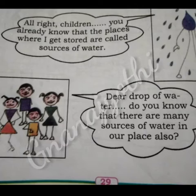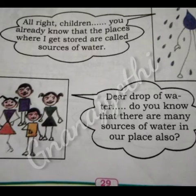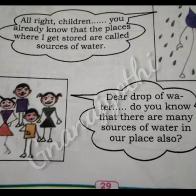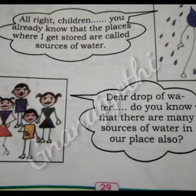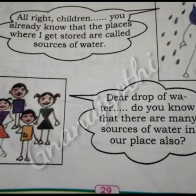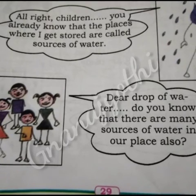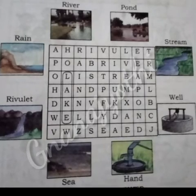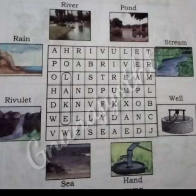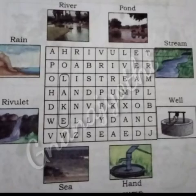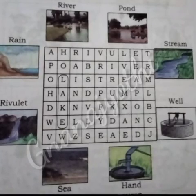Alright children, you already know that the places where water gets stored are called sources of water. Children, dear drop of water, do you know that there are many sources of water in our place also? Observe this picture children. The other sources of water are river, pond, stream, well, hand pump, sea, reservoir, and rain. These are the sources of water.